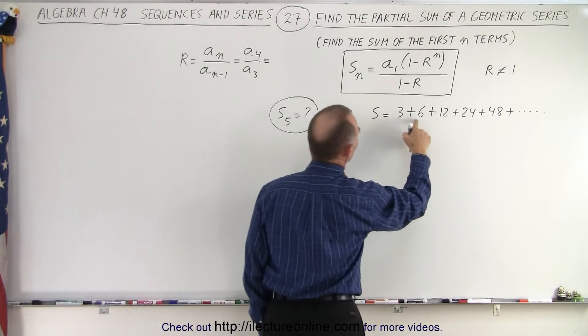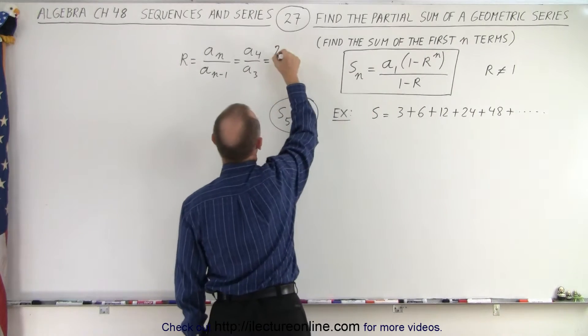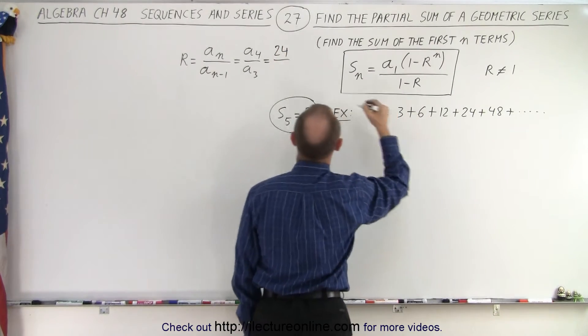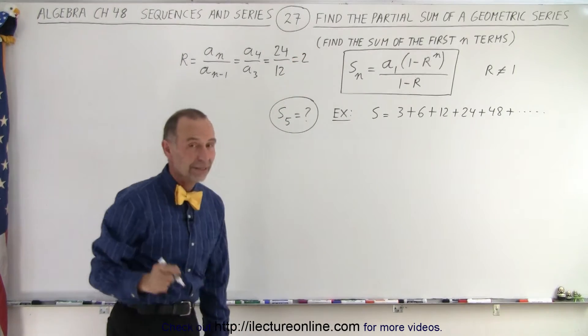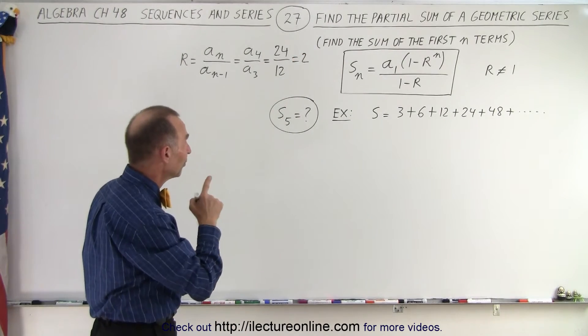Here we go: 24 divided by 12. You can see that the common ratio equals 2.